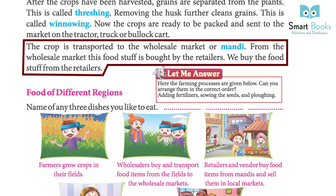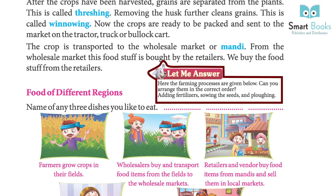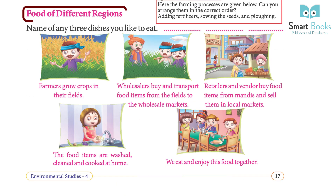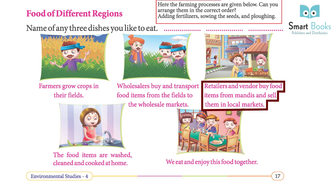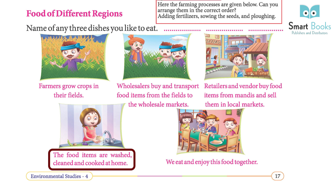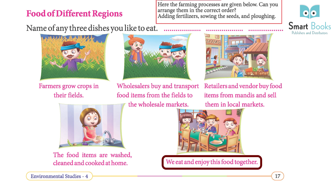We buy the foodstuff from the retailers. Farmers grow crops in their fields. Wholesalers buy and transport food items from the fields to the wholesale markets. Retailers and vendors buy food items from mandis and sell them in local markets. The food items are washed, cleaned, and cooked at home, and we eat and enjoy this food together.